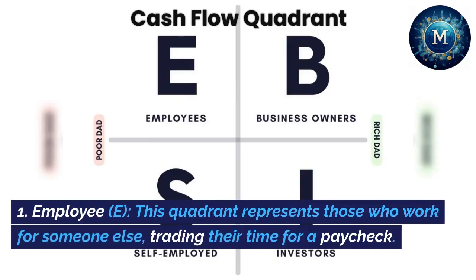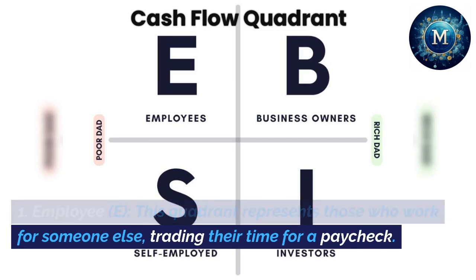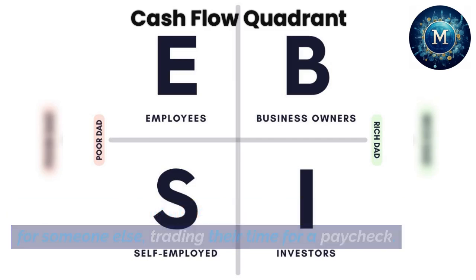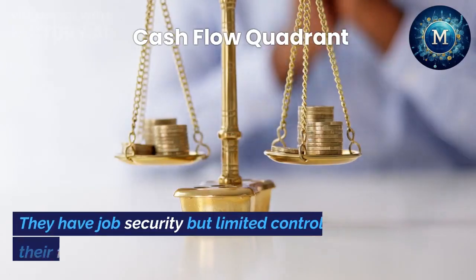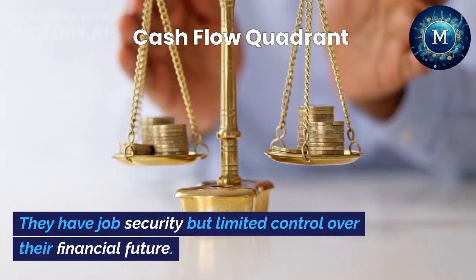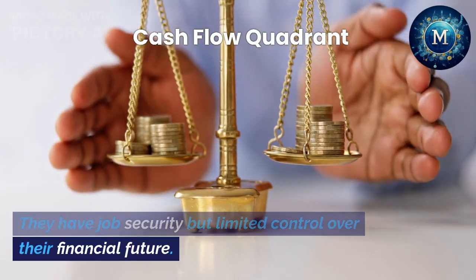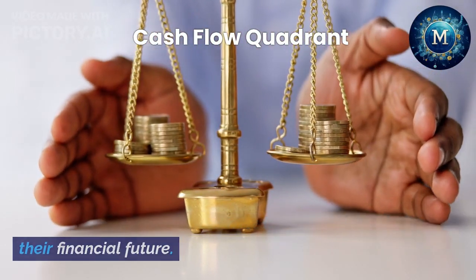1. Employee (E). This quadrant represents those who work for someone else, trading their time for a paycheck. They have job security but limited control over their financial future.